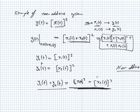The same squaring system is also non-homogeneous: multiplying the input by A gives A squared times X squared, while multiplying the output by A gives A times X squared — the scalings differ. You can have all combinations: non-homogeneous but additive, non-additive but homogeneous, or both additive and homogeneous, which is the linear case.